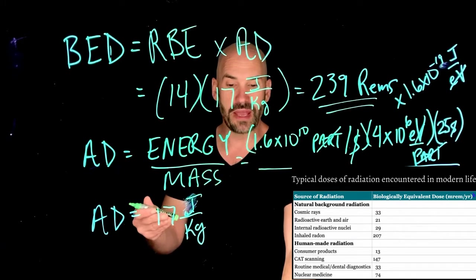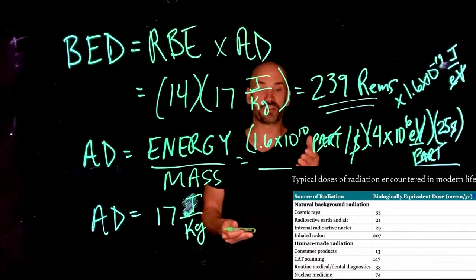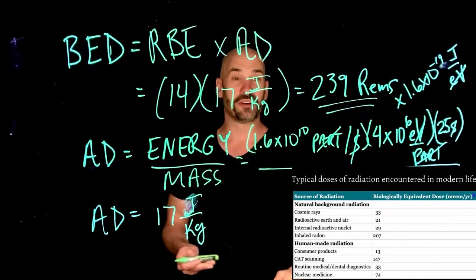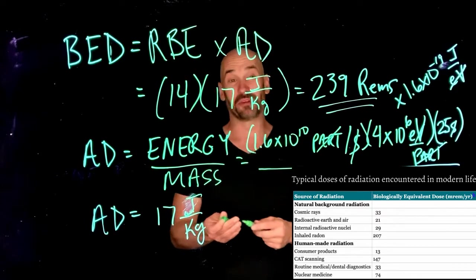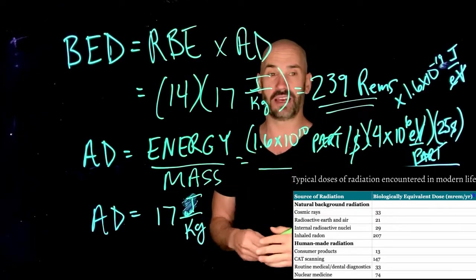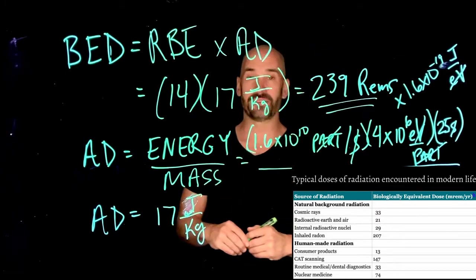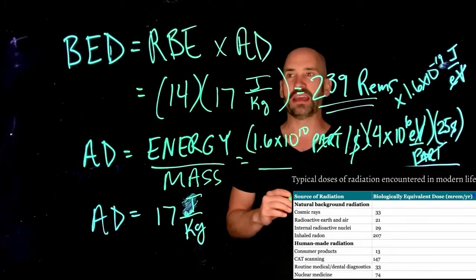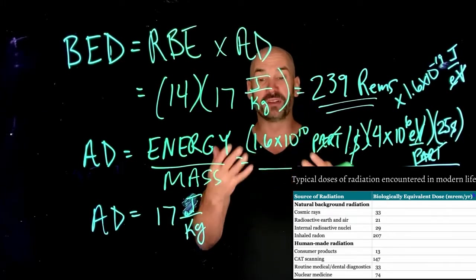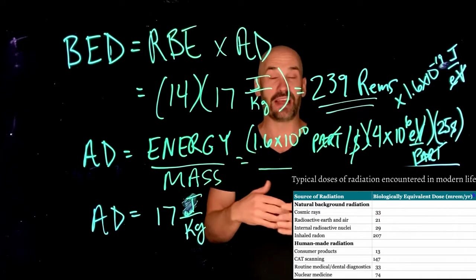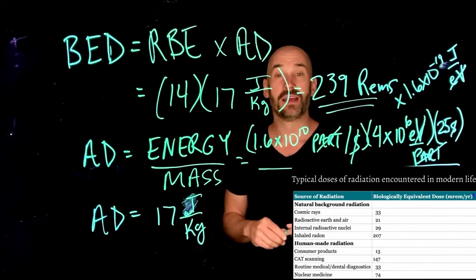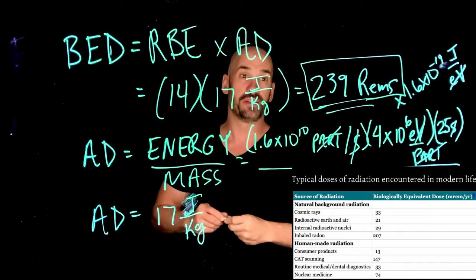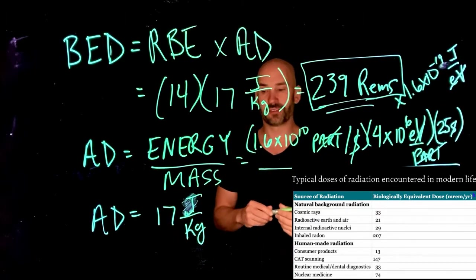Then there's human-made radiation. Consumer products alone are responsible for 13 millirems per year. Getting routine medical and dental diagnostics, that's 33 millirems per year. If you work at a hospital, this can actually be higher because you're more often exposed to these radiations. None of these are super dangerous in and of themselves. Don't stress out and don't think you need to run out of a career in medicine, but it is important to know that we actually all experience a certain amount of radiation per year as a result of just going about our ordinary daily lives. But you can see that none of these even remotely compare to how much you get if you are actually being treated for something like a brain tumor.